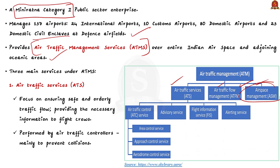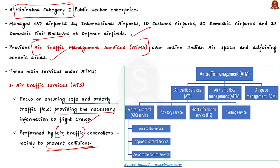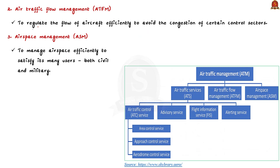ATS focuses on ensuring safe and orderly traffic flow and providing necessary information to flight crews. Its main functions are to prevent collision by applying appropriate separation standards and issue timely clearances and instructions that create orderly flow of air traffic. The primary objective of ATFM is to regulate the flow of traffic as efficiently as possible to avoid congestion of certain control sectors. Airspace management, ASM, aims to manage airspace as efficiently as possible to satisfy its many uses, both civil and military.